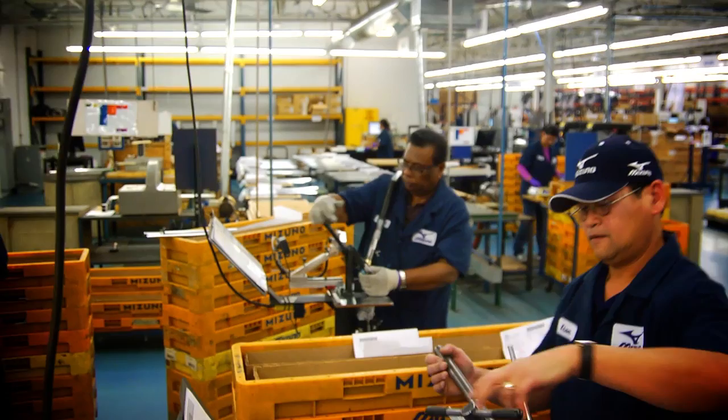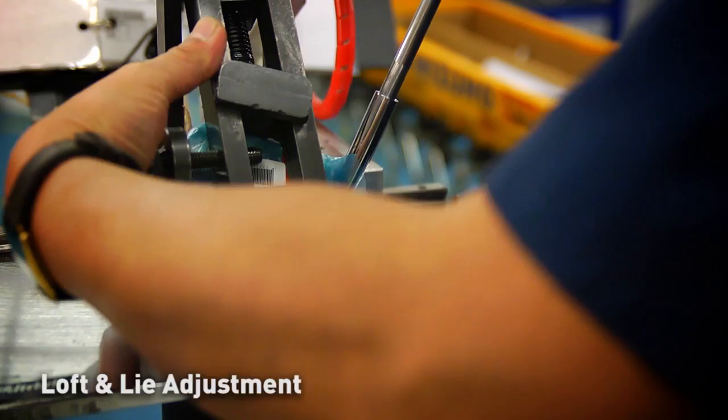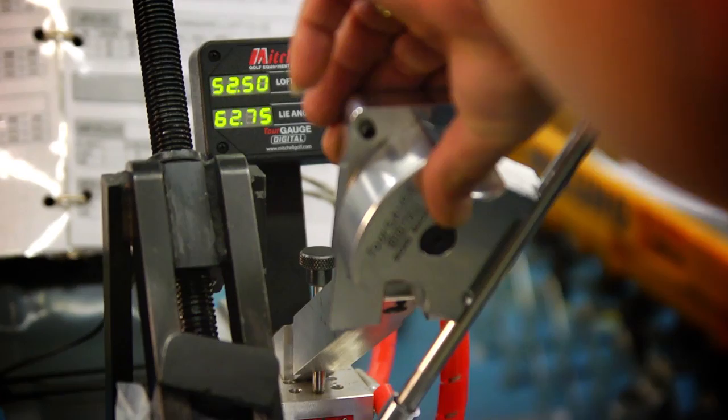With regard to the club heads, each one is precisely bent and adjusted to match your specific loft and lie requirements. After they are matched by hand, a digital loft and lie machine leaves no doubt by confirming that the loft and lies are indeed correct.